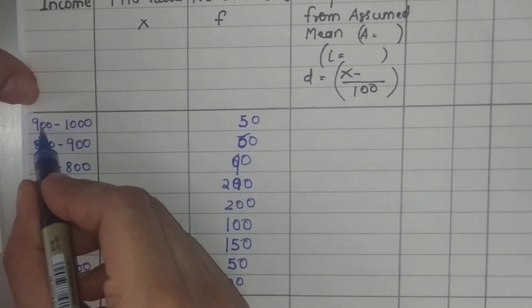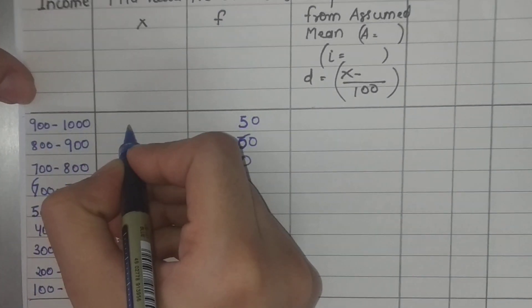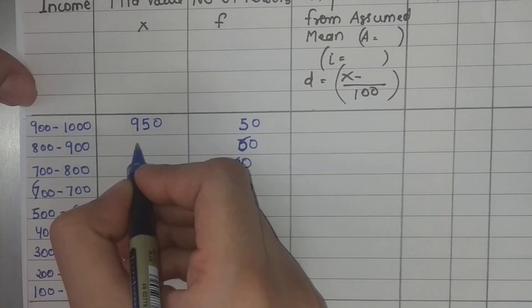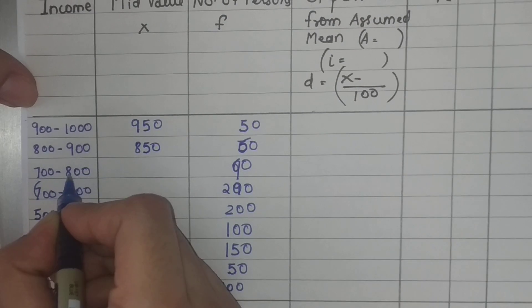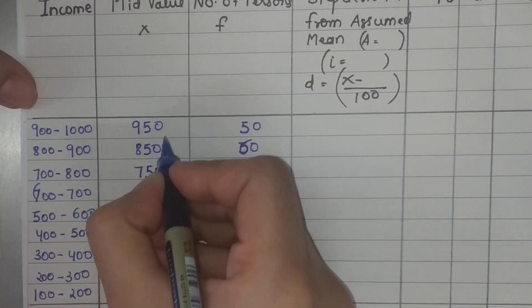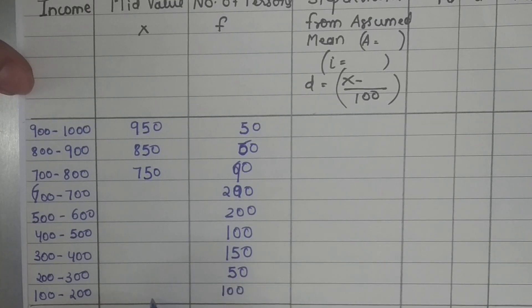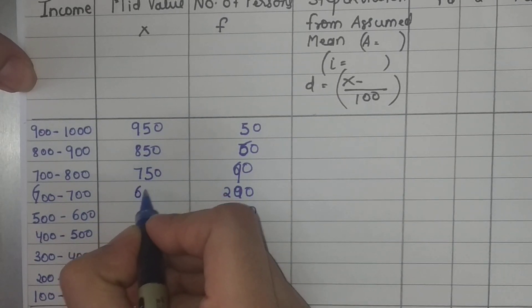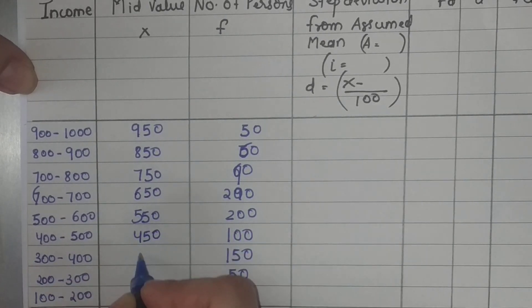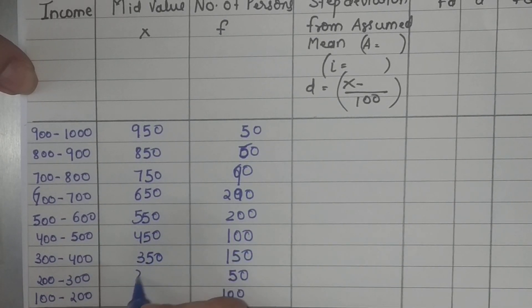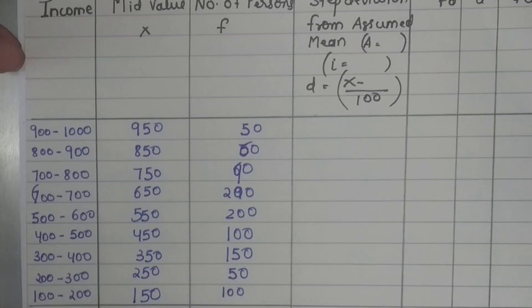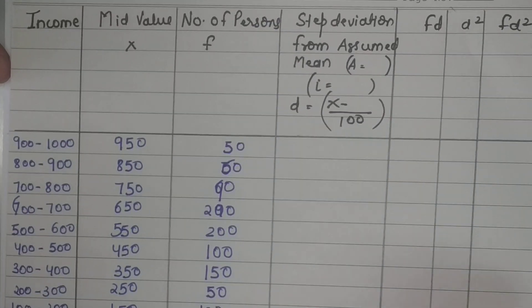Now I find the midpoints. Midpoint of 900–1000: (900+1000)/2 = 950. Midpoint of 800–900: (800+900)/2 = 850. Since each class interval is 100 wide, the midpoints reduce by 100 at each step: 750, 650, 550, 450, 350, 250, and 150. This is your x column.